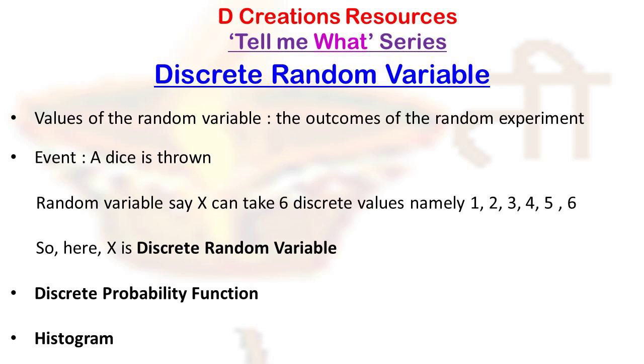Similarly, if it denotes the outcome of the experiment or the event of casting a dice, then there are different kinds of outcomes possible.